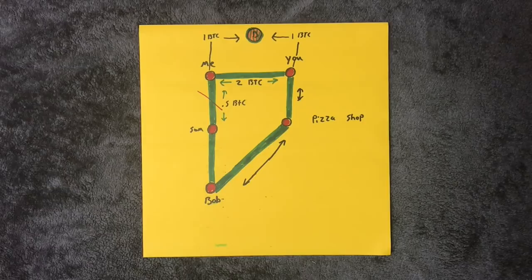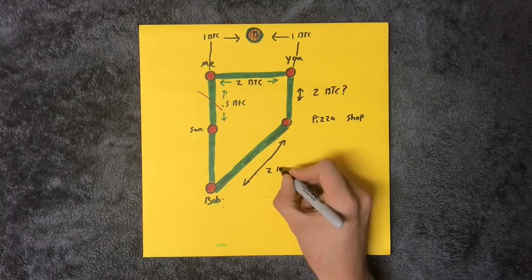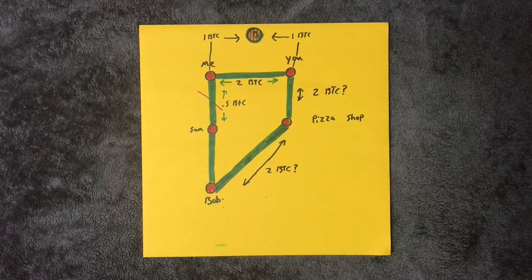Or so it would seem. A problem with this system is the requirement to preload every open channel you have ahead of time, with what you assume will be the upper limit of your spending habits with that channel. It's more convenient to have one open channel and a large amount of Bitcoin to a well-connected party that consistently has more money than you so you can always route through.